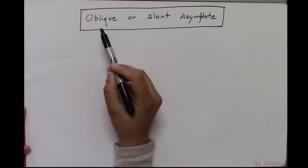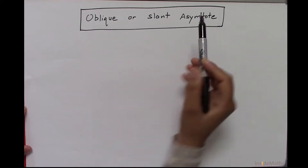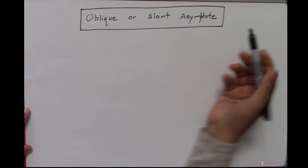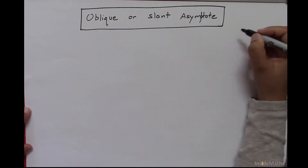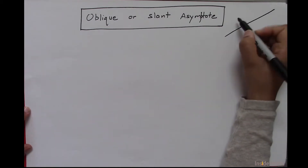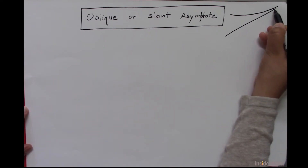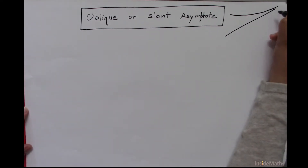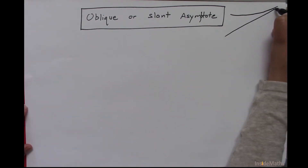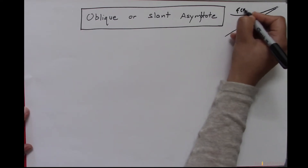In this video, we will see what is an oblique asymptote. By the definition of an asymptote, an oblique or slant asymptote is an oblique line that corresponds to the curve of some function such that the distance between the curve and the line approaches zero as they grow in the same direction. That means this distance is getting smaller and smaller, and this line is called an oblique asymptote of this curve or function.